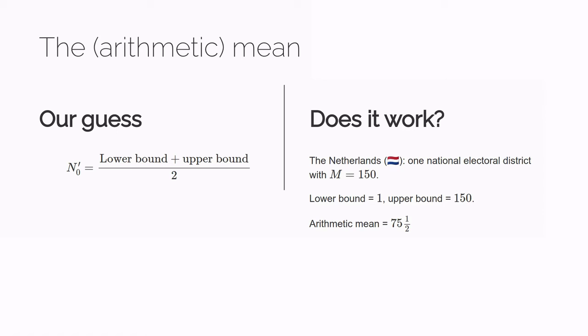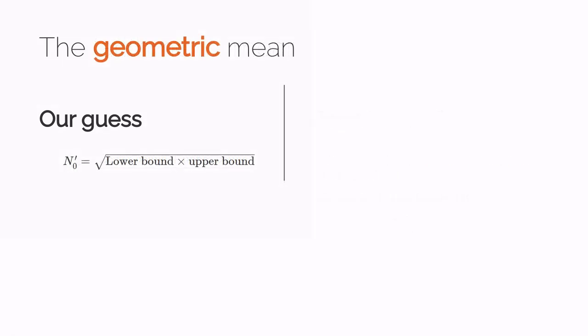So we need to use a different average, the geometric mean. The geometric mean of two numbers involves multiplying and then taking the square root. It's going to give us a smaller number than the arithmetic mean, but let's see how much smaller it is in practice.